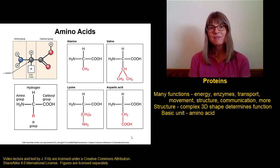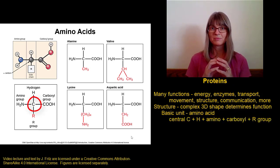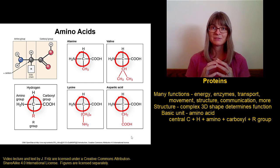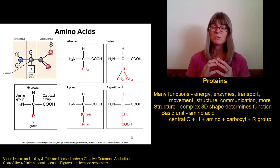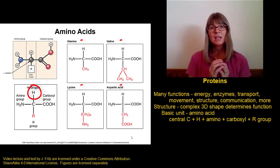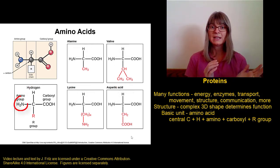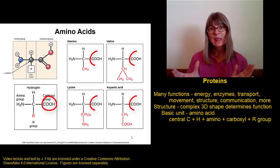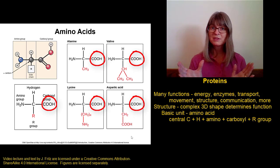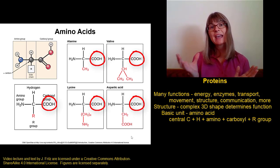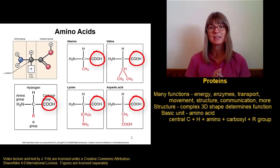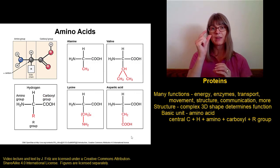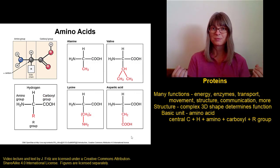All amino acids have the same basic structure. They all start with a central carbon in the middle of each amino acid. Connected to this carbon we have a hydrogen, an amino group — an NH2 group — that's why it's called an amino acid, because of the amino group. And we have a carboxyl group. A carboxyl group is actually a weak acid, so that's where the acid part comes from in the name amino acid. We have our central carbon with a hydrogen, an amino group, and a carboxyl group.